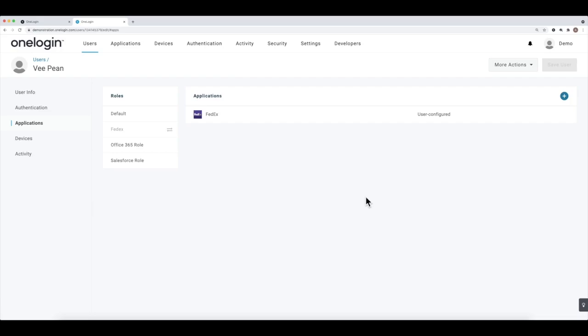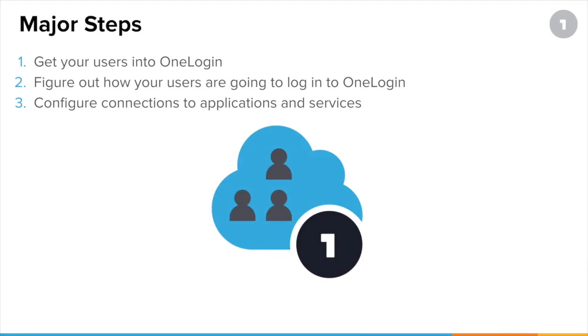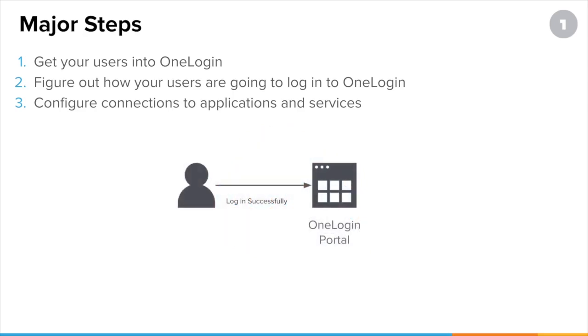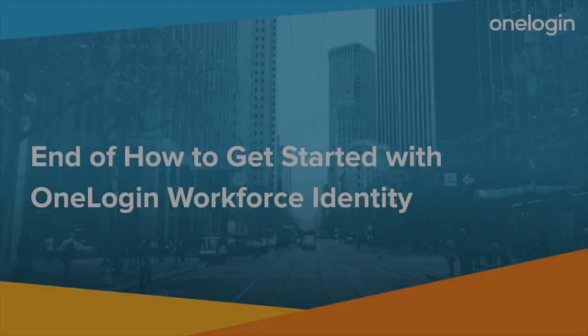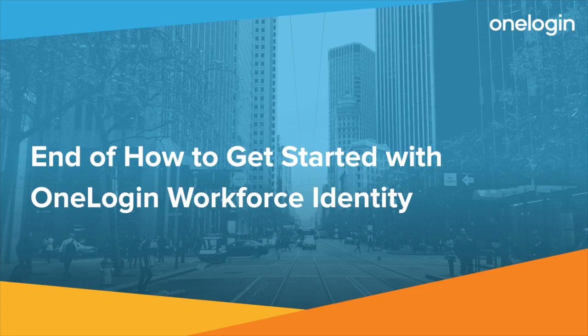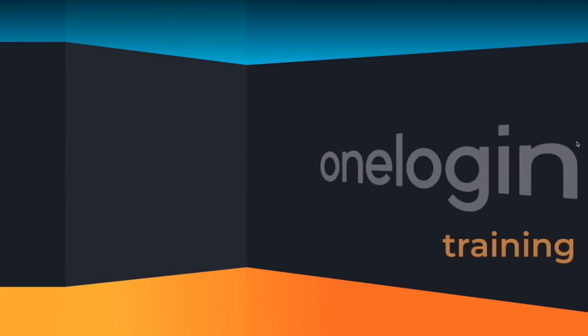Once the application is fully configured — provisioning if necessary, single sign-on authentication, and any app policies for additional security — you can assign the applications to users and everyone can access what they need. We've now completed all three major steps: getting users into OneLogin, making sure they can log in securely with great user policies, and configuring app connectors with both provisioning and single sign-on so users can start logging in. This concludes the last part of how to get started with OneLogin Workforce Identity.